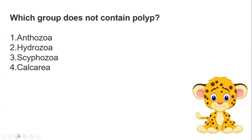Next question: which group does not contain polyp? Options are Hydrozoea, Hydrozoa, Scyphozoa, and Cercaria. We have already discussed polyps and medusa. The answer is Cercaria — this is the group that does not have a polyp structure.